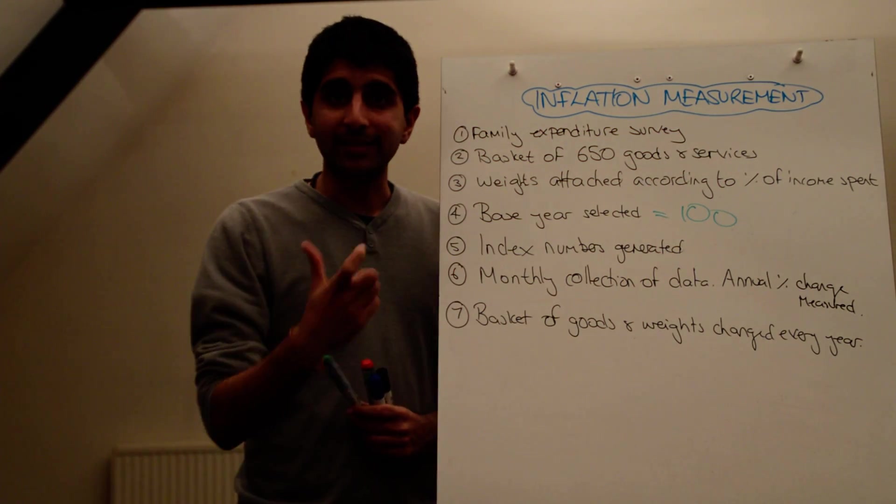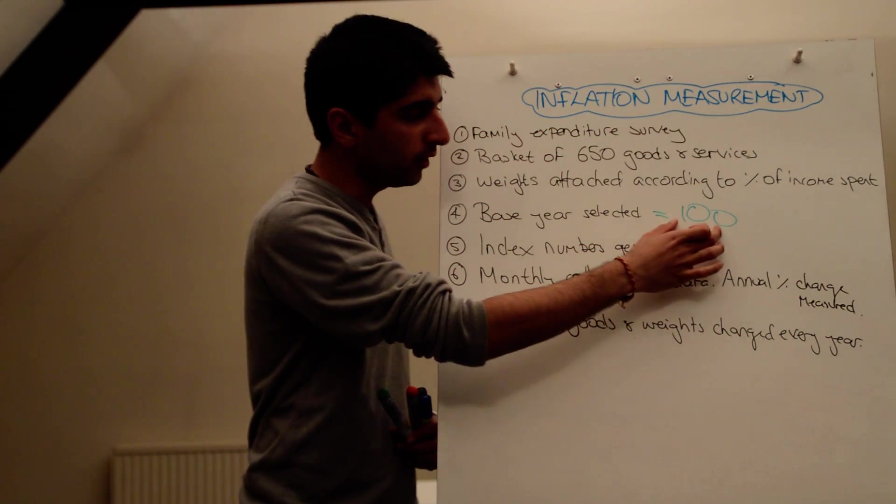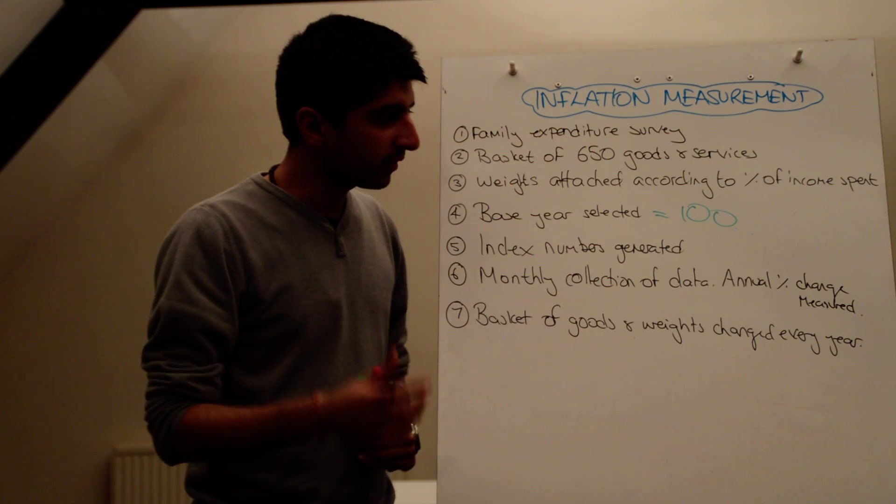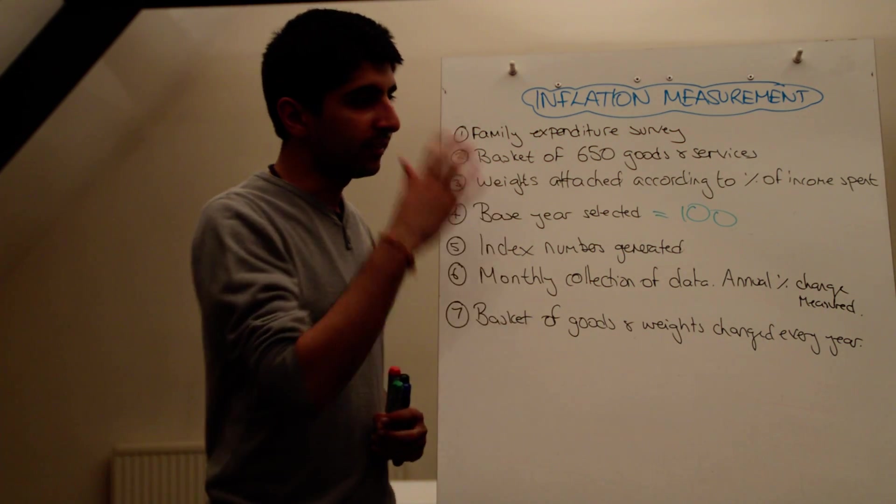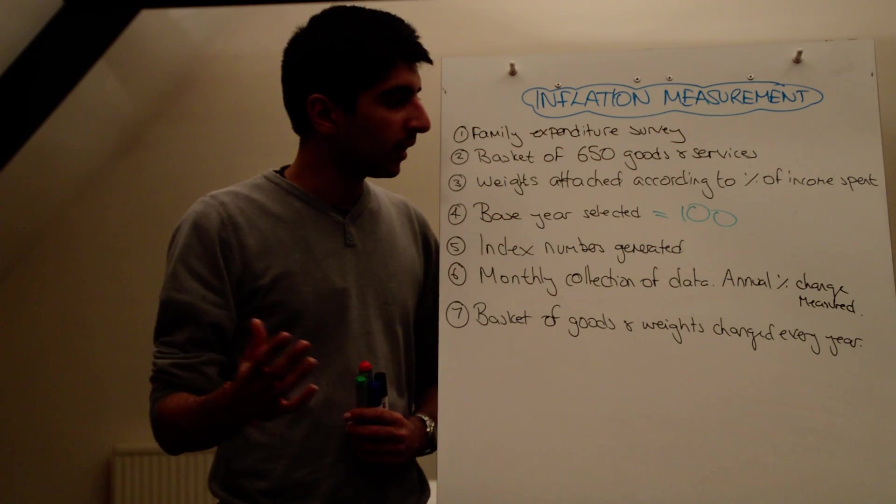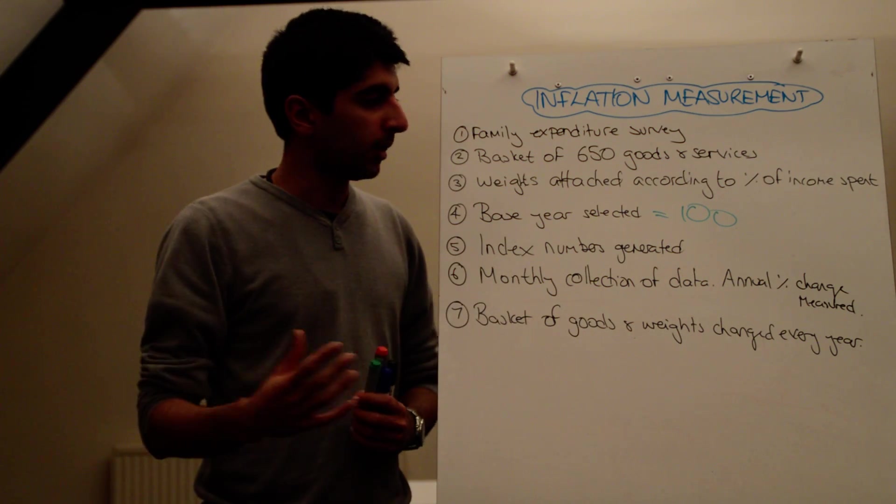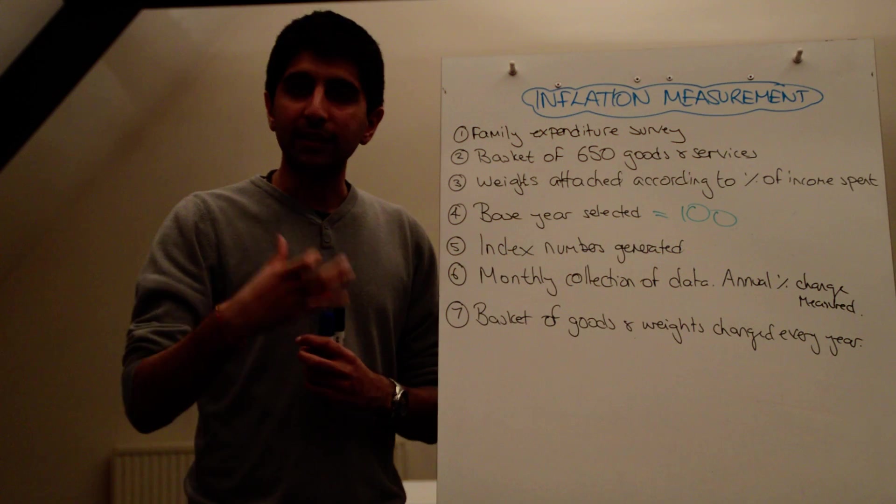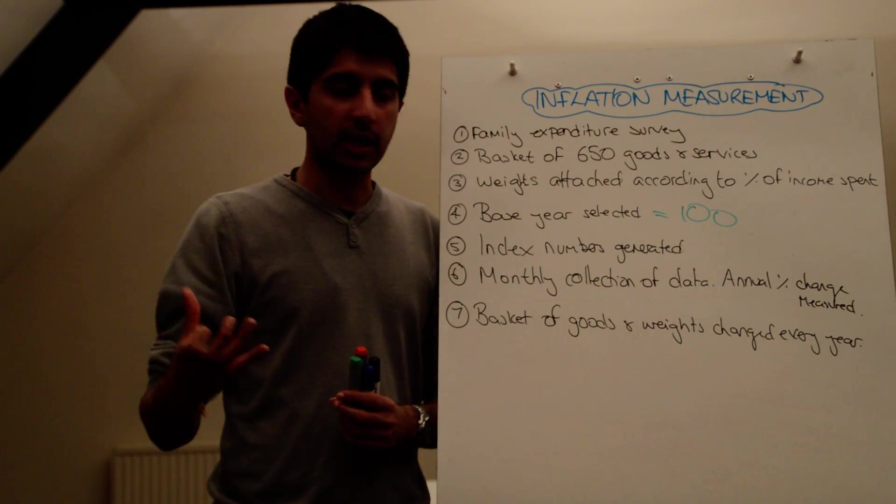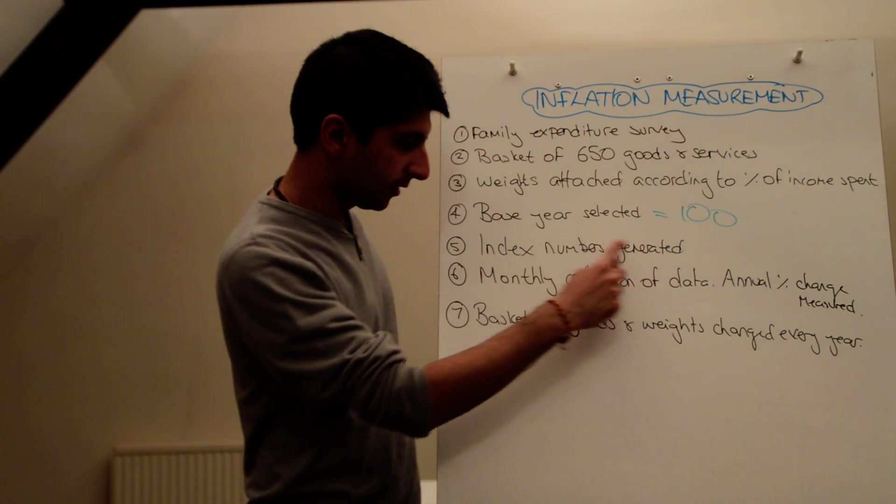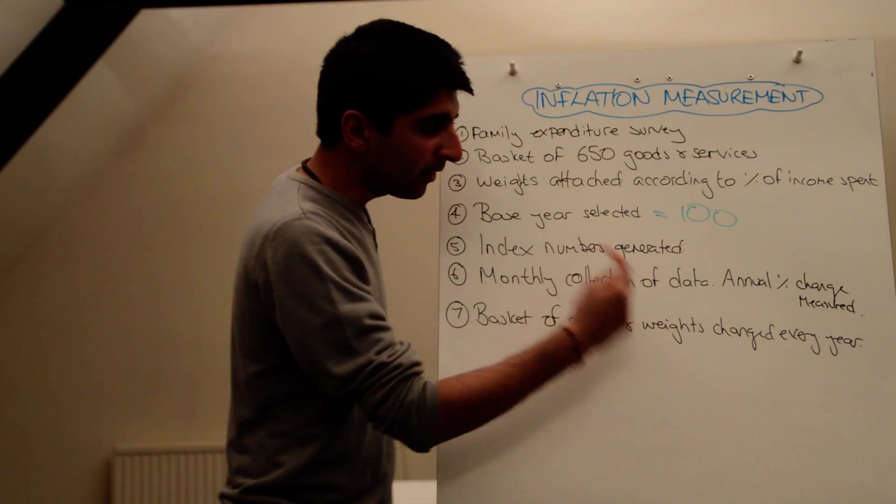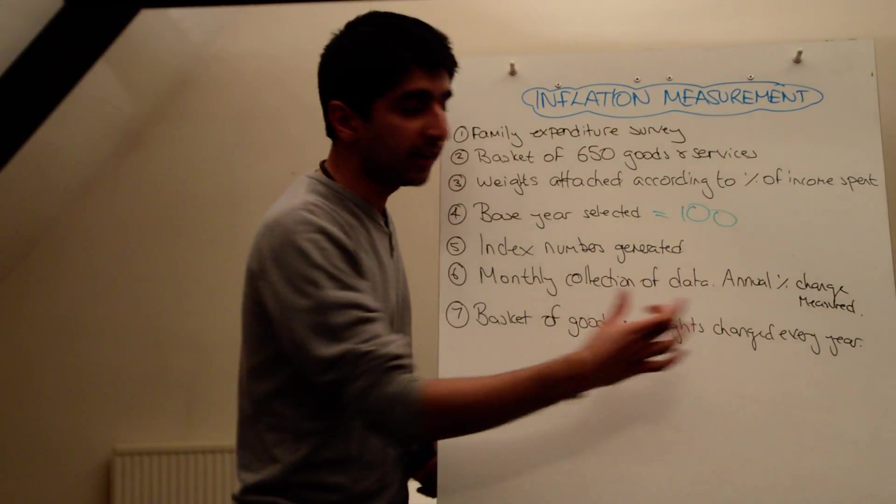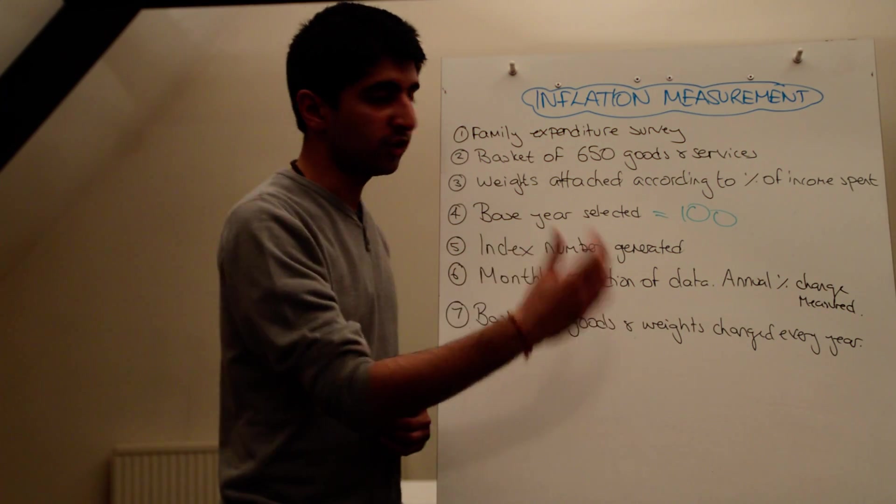We then generate index numbers. So we have 100 for the base year. We then need to generate index numbers. So all that's done is inflation is tracked over time. It's measured over time. And the index numbers, as they change, then give you a measure of the rate of change of inflation. So index numbers are generated. There is then a monthly collection of data, of which an annual percentage rate can be measured.